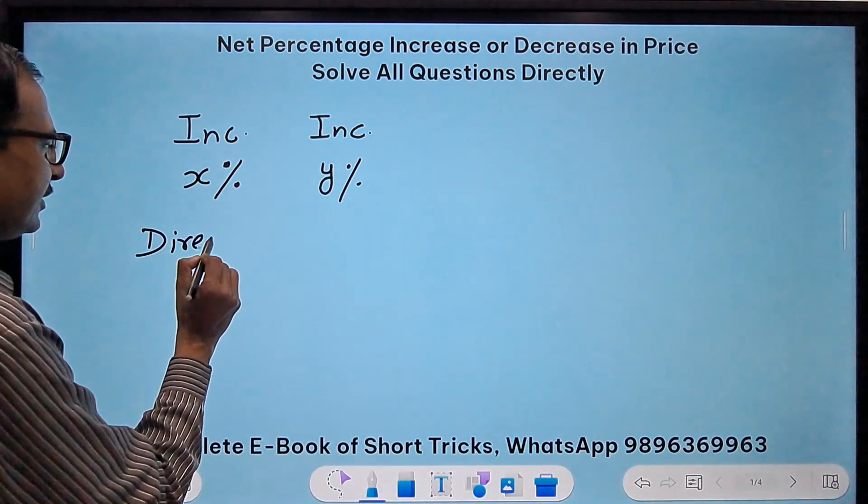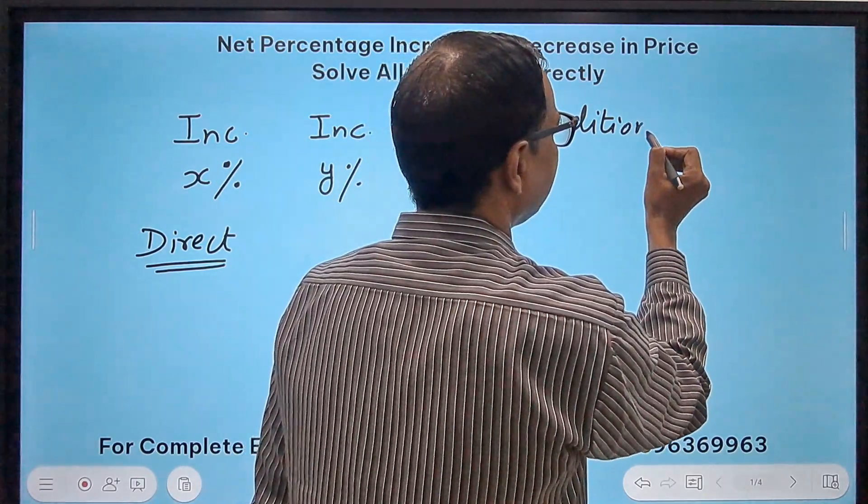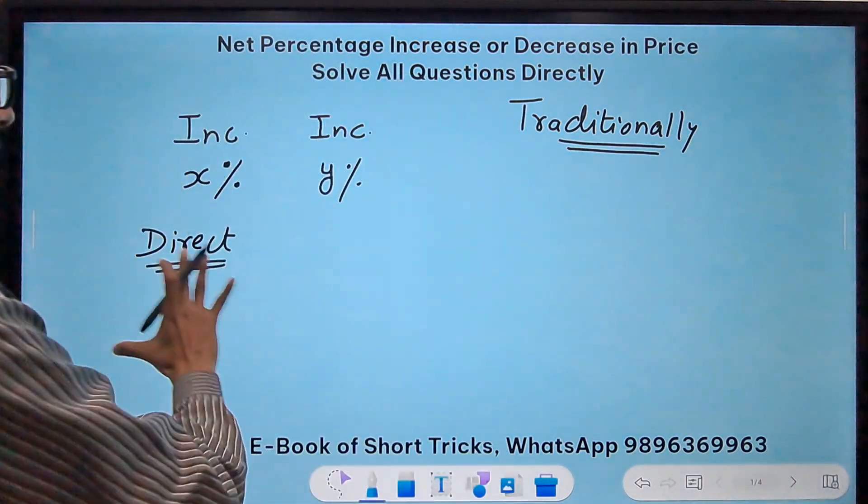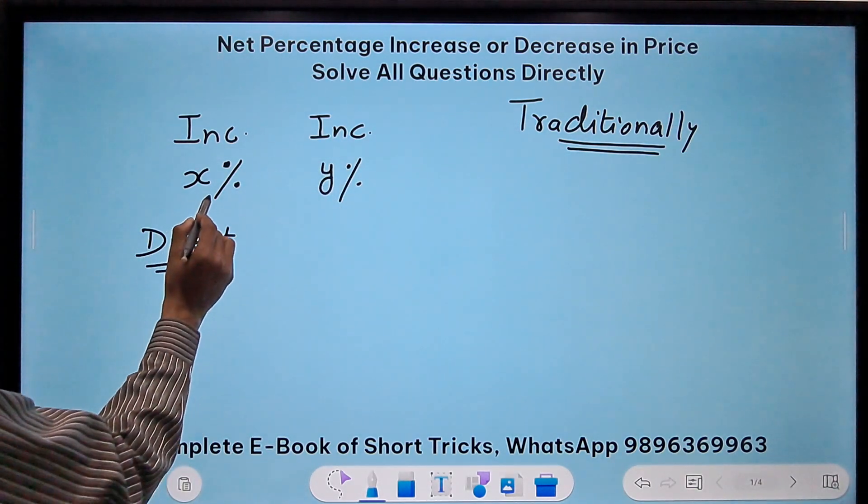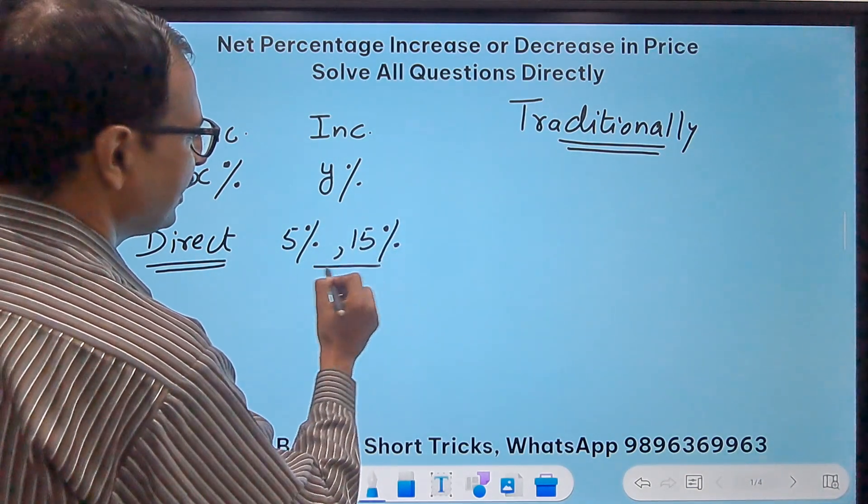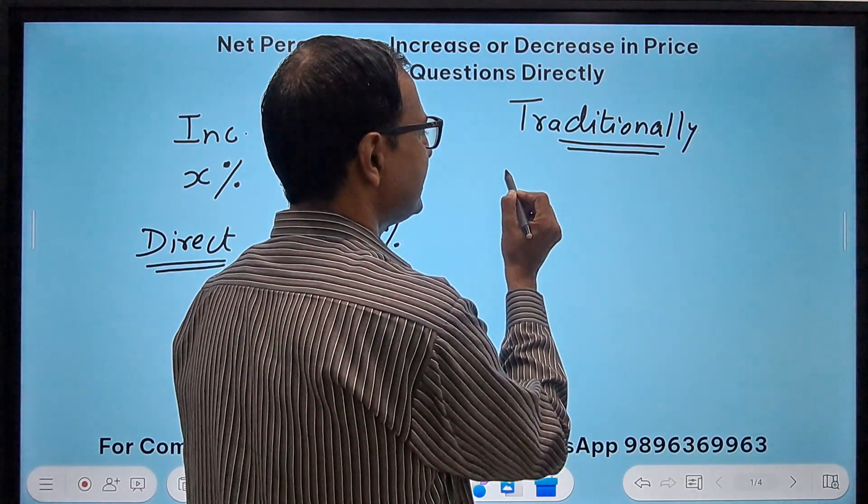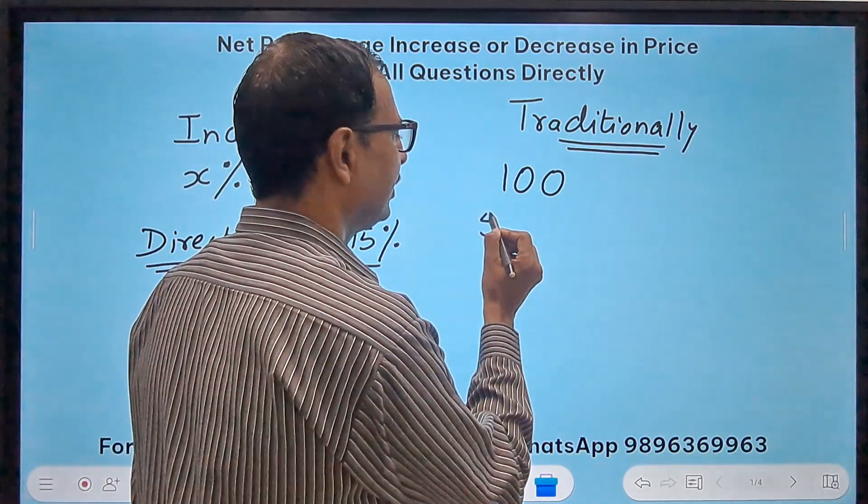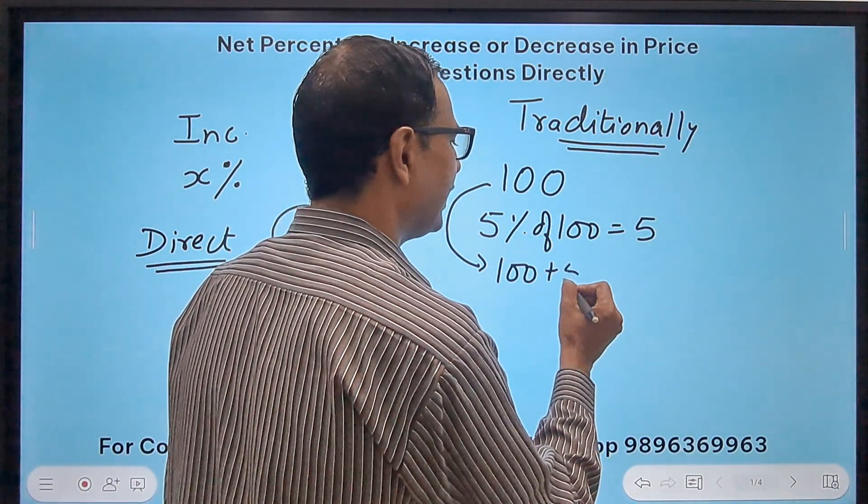Traditionally, let's take the example where we have 5 percent increase first and then 15 percent increase the second time. These are the values given in the question. Traditionally I'm going to assume that the original price is 100, the easiest one which we can assume. Now 5 percent of 100 is 5, so the value will become 100 plus 5, that is 105 after the first increase.